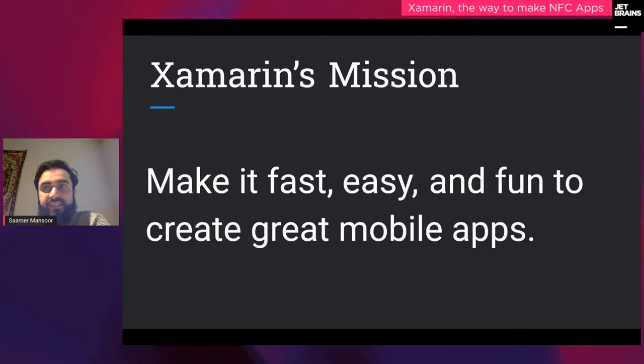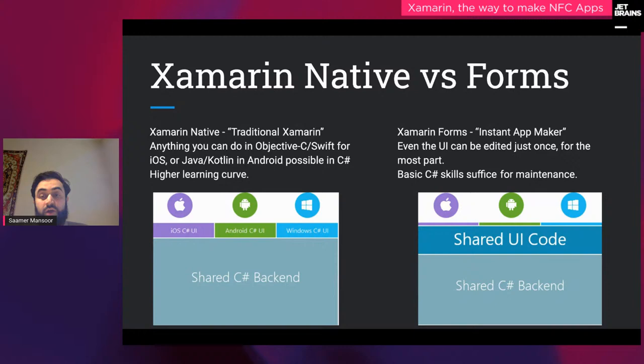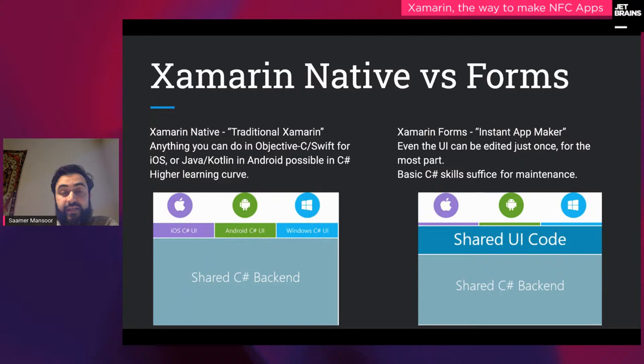Xamarin was created to make it easy, fast, and fun to create great mobile apps. Xamarin is owned by Microsoft, which bought it for around $150 million. Earlier you had to pay $1,000 a year for a license, but then they made it free. In Xamarin there are two ways of building mobile apps: Xamarin Native and Xamarin Forms. From what I was told by a PM at Microsoft, about 10% of mobile apps are still built with Xamarin Native versus Xamarin Forms.